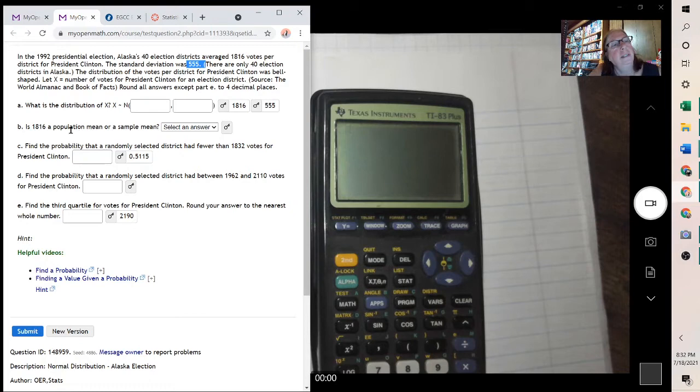Is the 1816 a population mean or a sample mean? Well, if we read the problem, in the 1992 presidential election, Alaska's 40 election districts averaged 1,816 votes. So they were talking about all of them. That's the whole population. If they would have only taken half of them and done a study with it, it would have been a sample. But since they used all of them, this would be population mean.